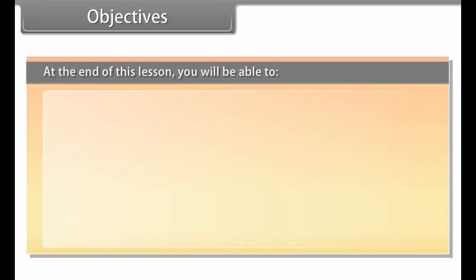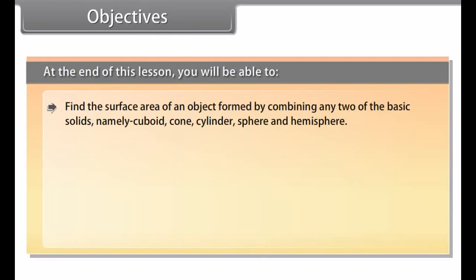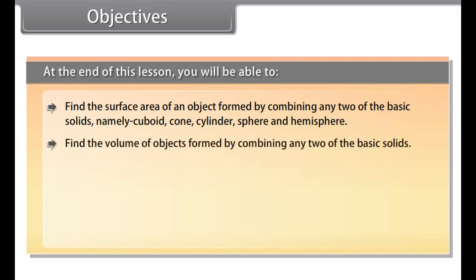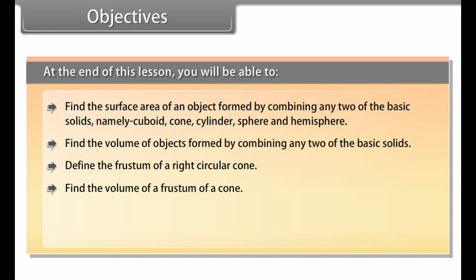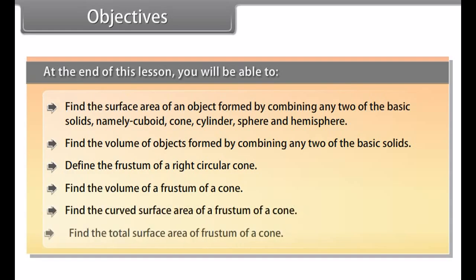At the end of this lesson, you'll be able to: find the surface area of an object formed by combining any two of the basic solids — namely cuboid, cone, cylinder, sphere, and hemisphere. Find the volume of objects formed by combining any two of the basic solids. Define the frustum of a right circular cone. Find the volume, curved surface area, and total surface area of a frustum of a cone.